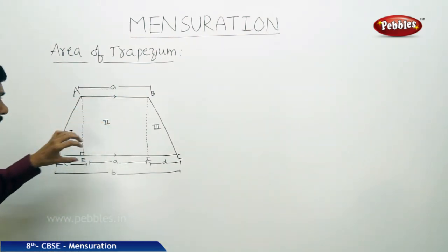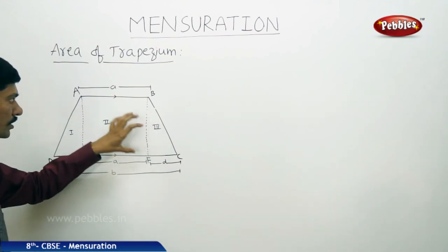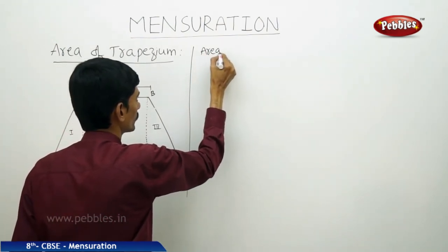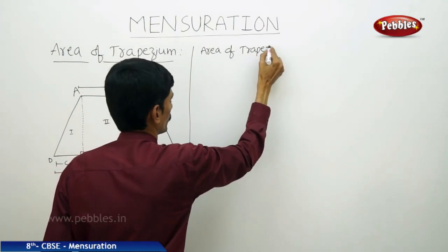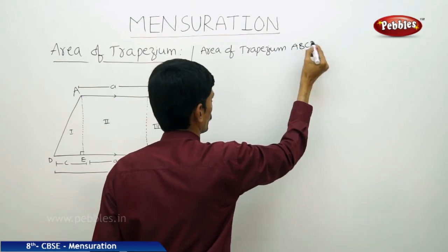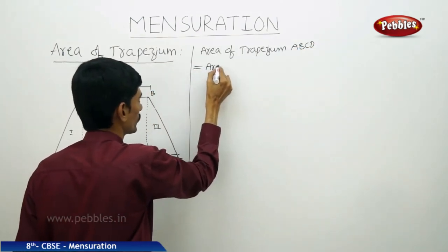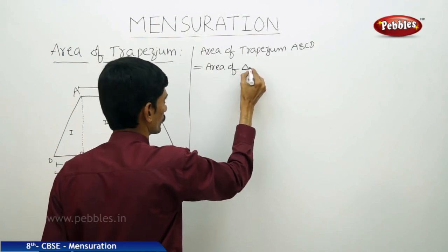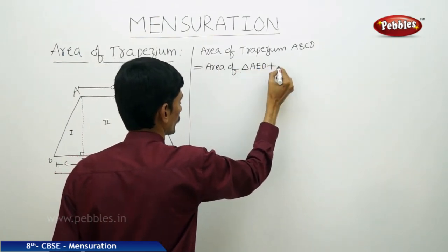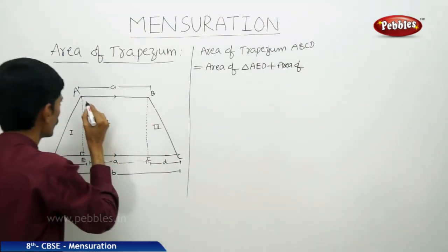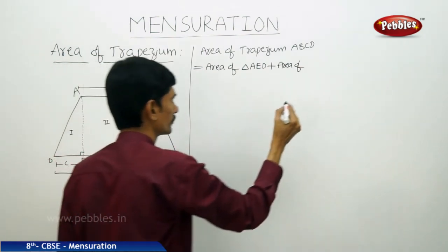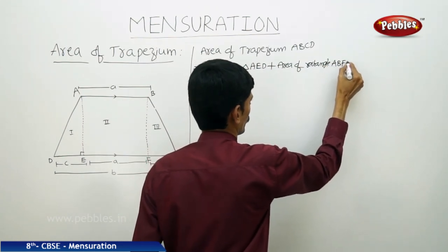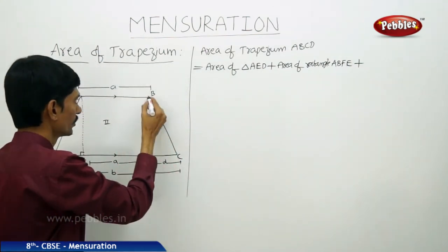To find the area of this trapezium, we find the area of each part and add the three parts together. So the area of trapezium ABCD equals area of triangle AED plus area of rectangle AEFB plus area of triangle BFC.